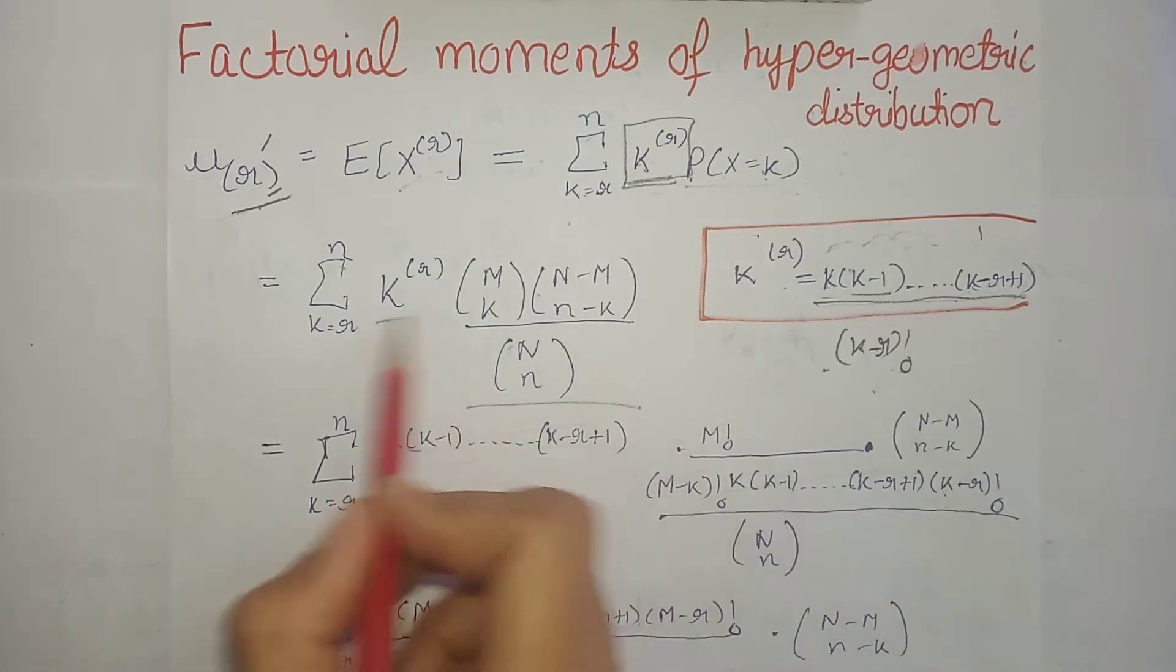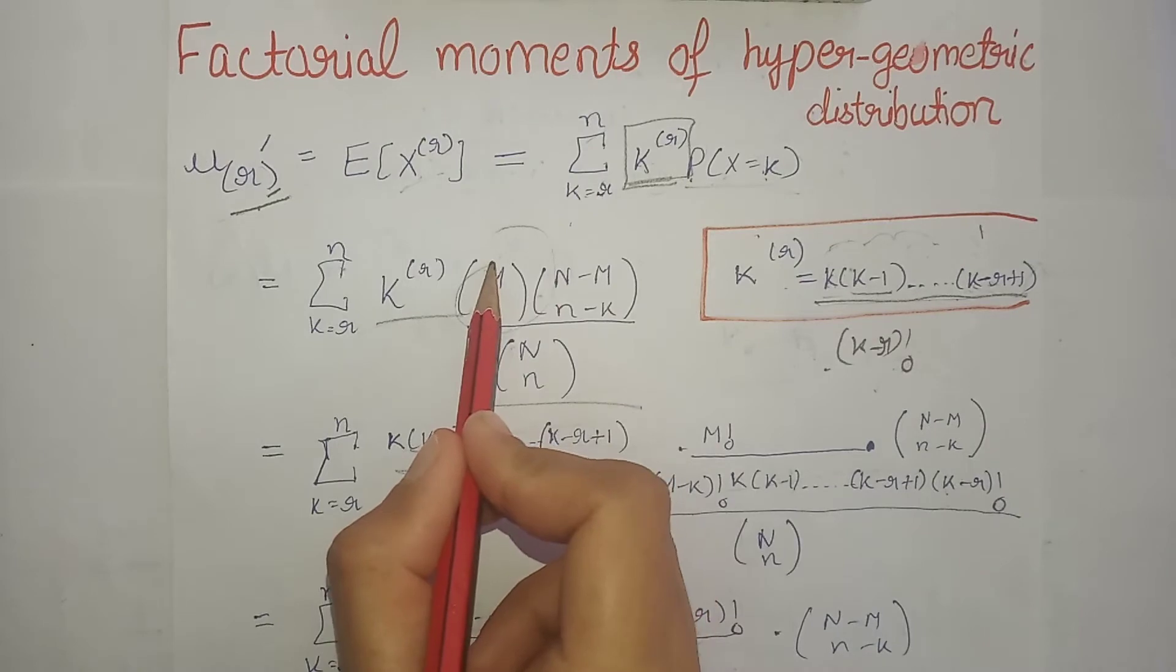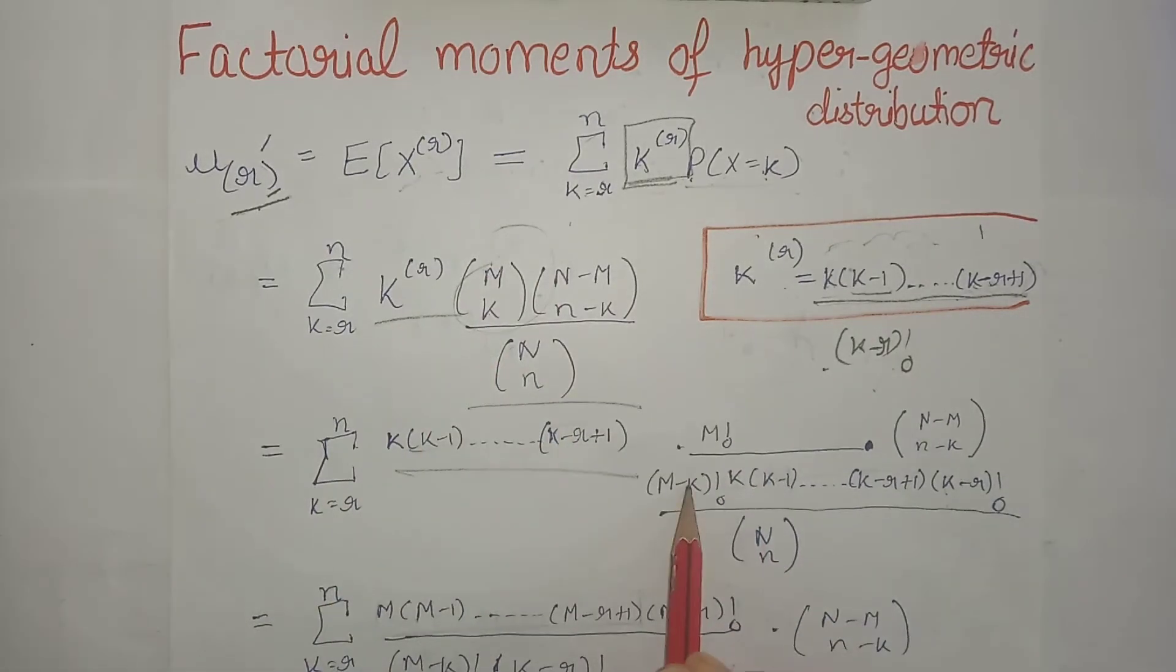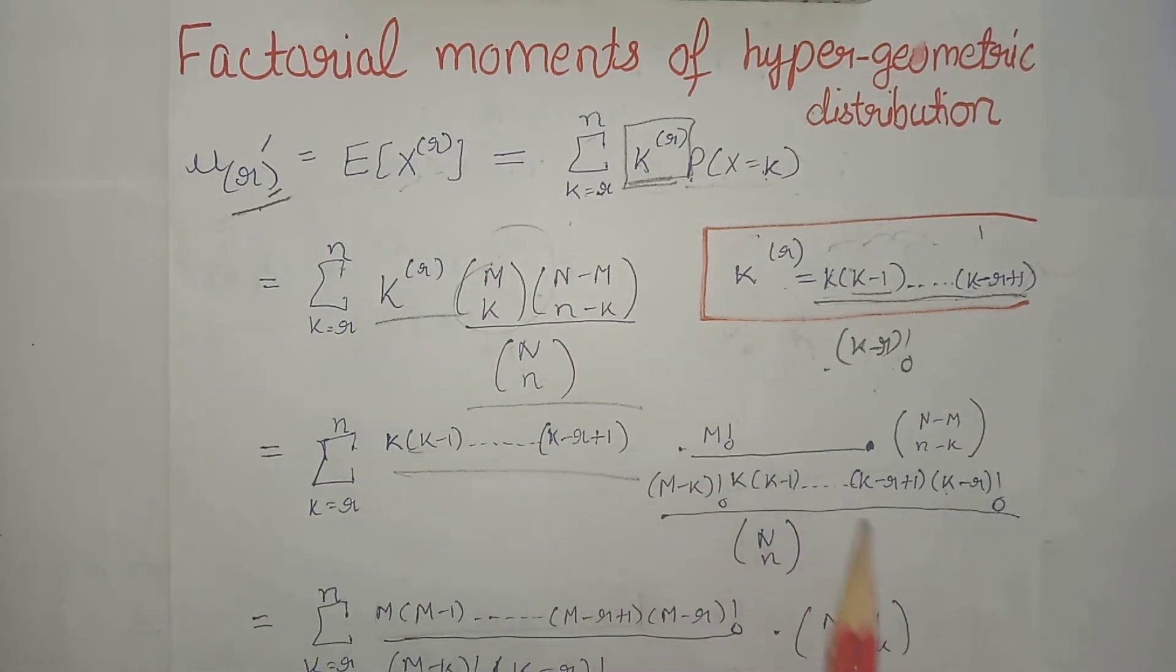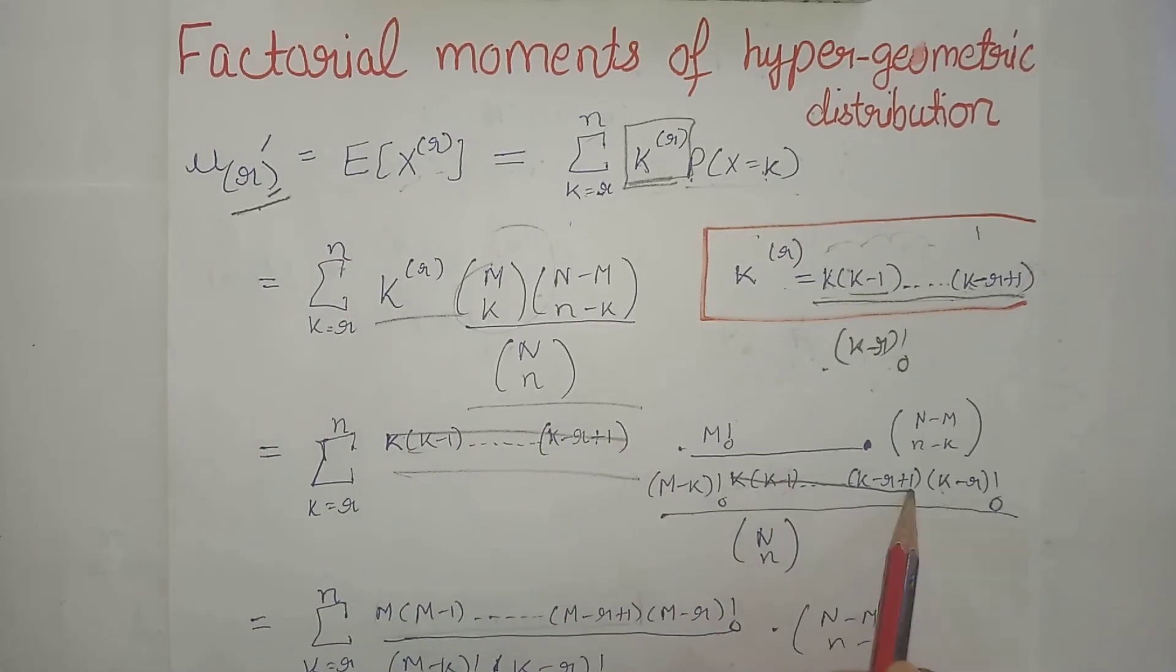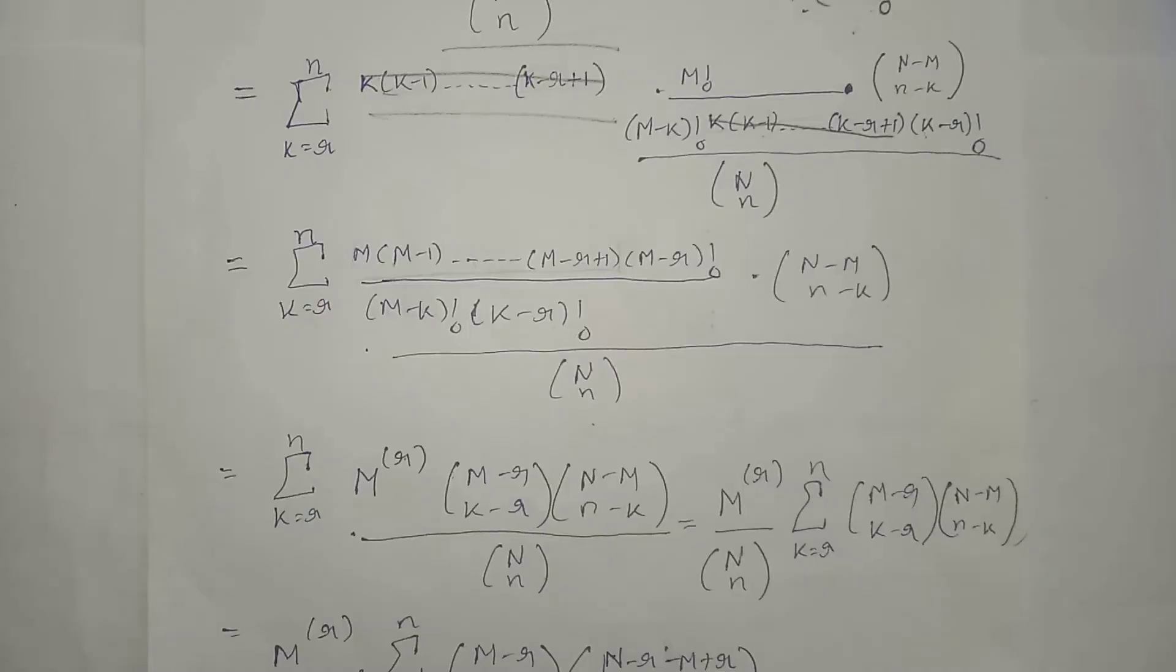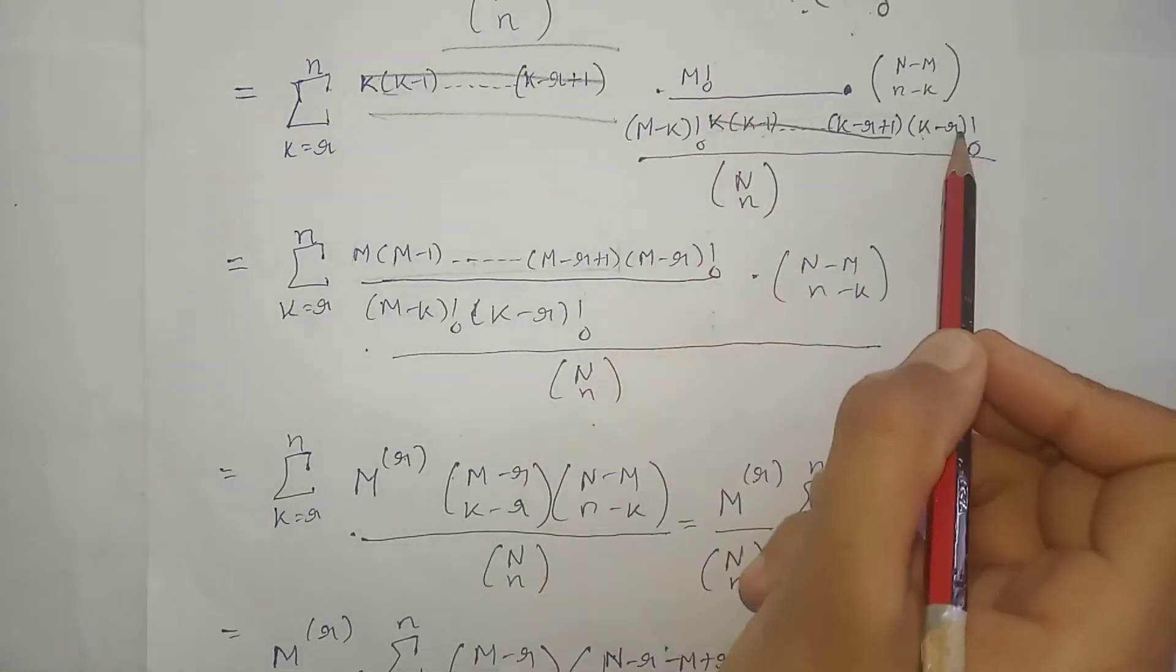Now we put the probability mass function of hypergeometric distribution here. Now this combination we will expand - we have M factorial divided by M minus k factorial, along with k factorial. We need to expand k factorial to the extent that all these terms cancel out. That's why we expanded it up to k minus r factorial.